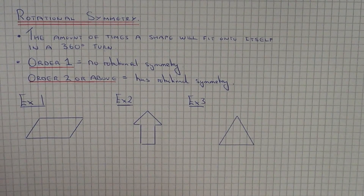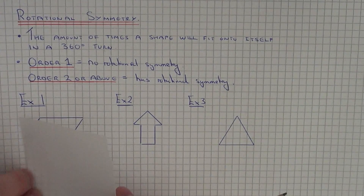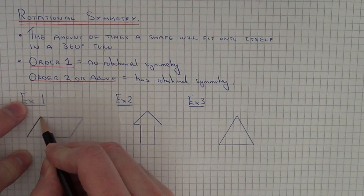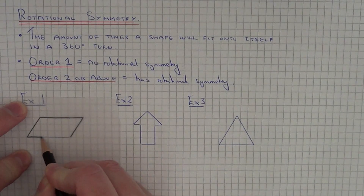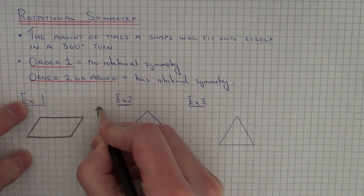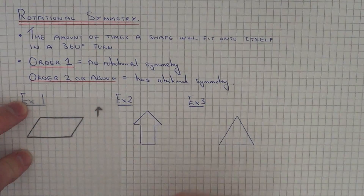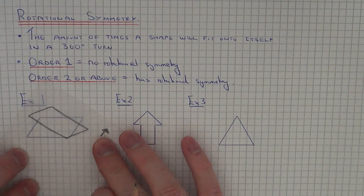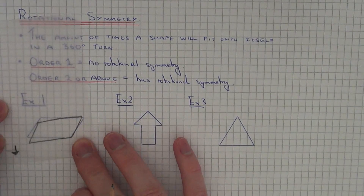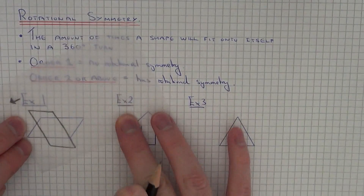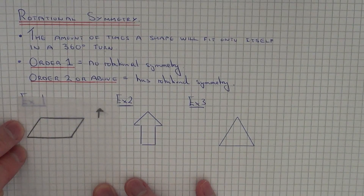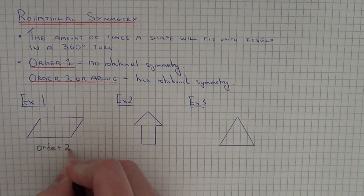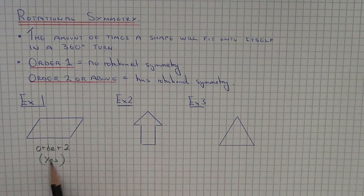In example 1 we have a parallelogram. Get yourself a piece of tracing paper, keep your tracing paper upright, and trace your shape. Put a little upward arrow so we know how far we have turned our shape — once we've done our full turn it should be pointing upwards. Let's turn our shape and see how many times it will fit onto itself in a full turn. There's once, and let's keep turning it until we're back at the start — and that's twice. So the order of rotational symmetry on this shape is order 2, and since it's 2 or above, the shape does have rotational symmetry.